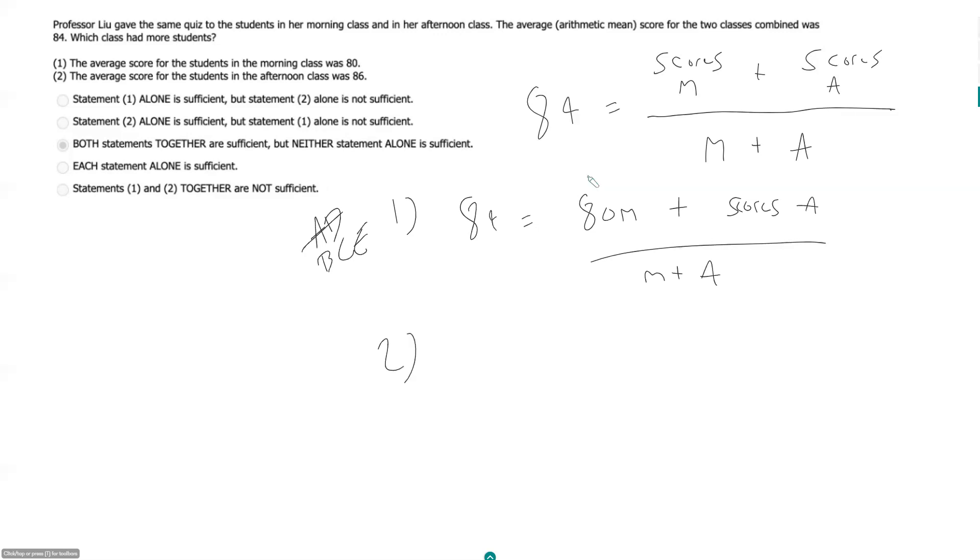Statement two says the average score for the students in the afternoon class was 86. So again by itself this is going to be insufficient. So we can go straight to looking at them together and it's insufficient again because we don't know anything about the morning class.